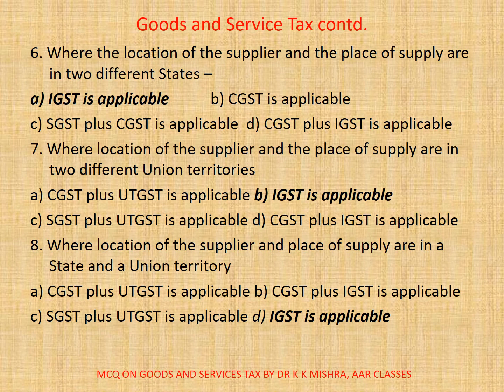Question 6: Where the location of the supplier and the place of supply are in two different states — A. IGST is applicable, B. CGST is applicable, C. SGST plus CGST is applicable, D. CGST plus IGST is applicable. Here correct option is A: IGST is applicable.